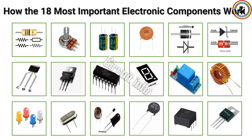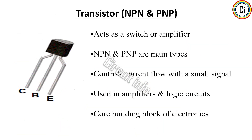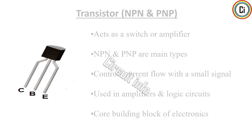Transistors are semiconductor devices that amplify or switch electronic signals. NPN and PNP are the two main types, differing by the direction of current flow. They act as electronic switches or amplifiers and are the core building blocks of modern electronics. Transistors enable devices to control large currents with small input signals, making them essential in everything from amplifiers and radios to digital logic circuits and microprocessors. Their stability and efficiency revolutionized electronics, allowing the development of complex and compact devices.